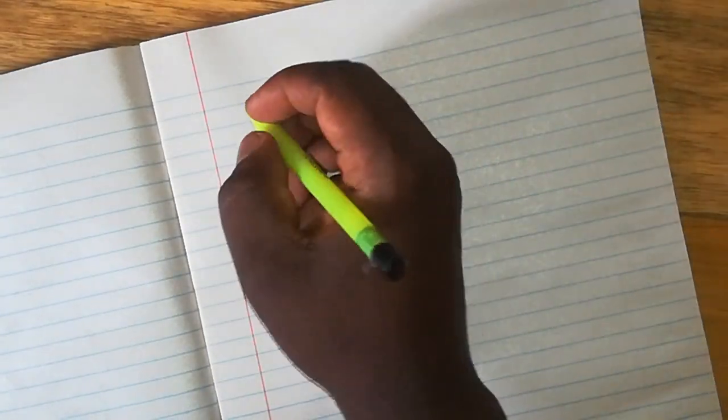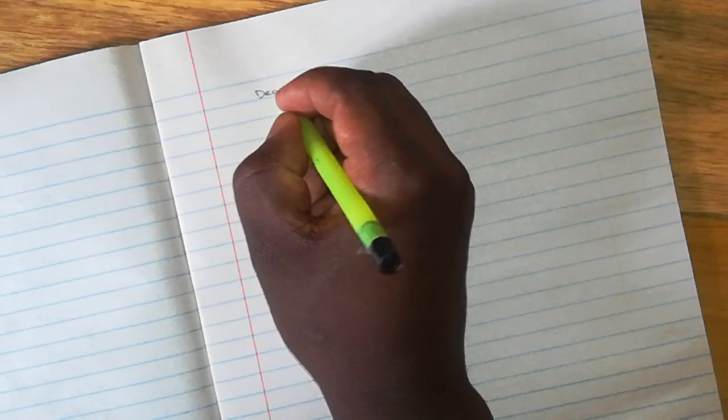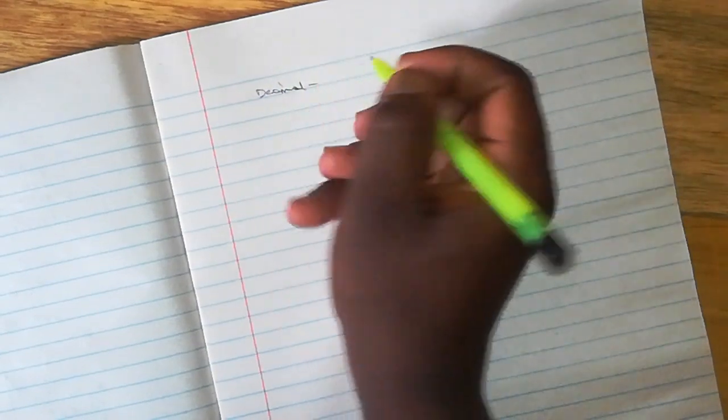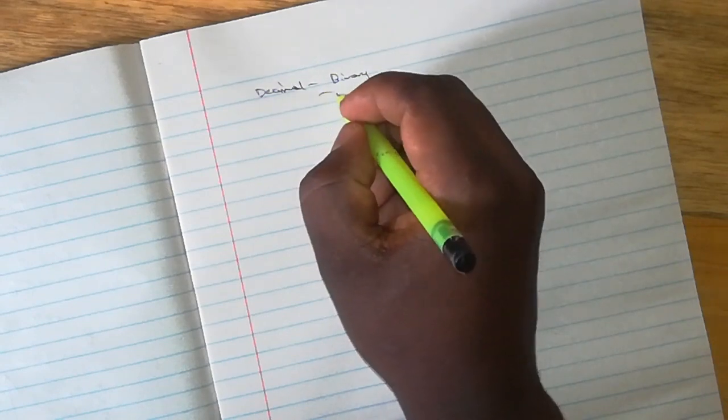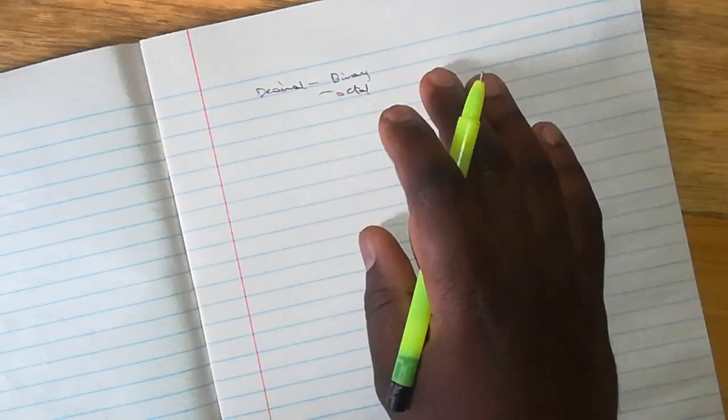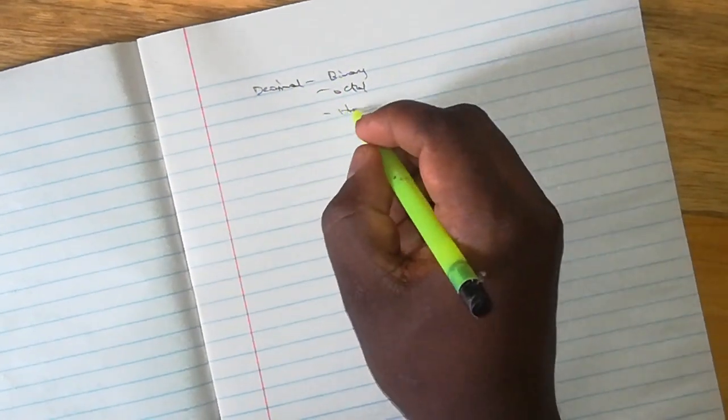Welcome once again to our classroom series. We have been looking at how to do number system conversions. In a previous video we already looked at how you can convert the decimal number system to binary, to octal, and to hexadecimal.